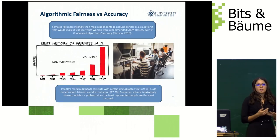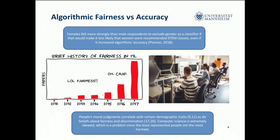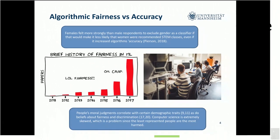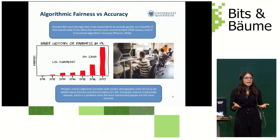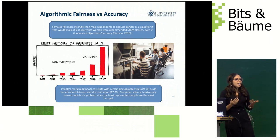Algorithmic fairness was not very popular until recently. Most research in machine learning focuses on optimizing accuracy, and computer science is a field skewed in its demography. Moral judgment is often related to demographic traits as well as beliefs in fairness and discrimination. Pearson in 2018 showed evidence that females felt more strongly than males about excluding the categorization of gender if it would make it less likely that women would be recommended STEM classes, even if it increases algorithm accuracy.